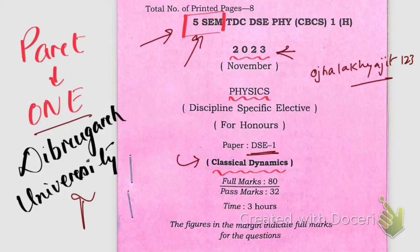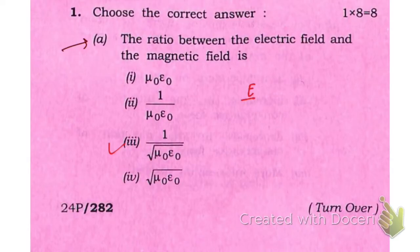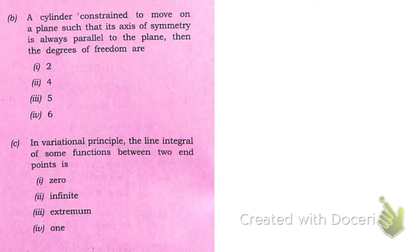The first question asks for the ratio between the electric field and the magnetic field. The correct answer is option three. The ratio between the electric field and the magnetic field is nothing but 1 over the square root of μ₀ε₀. That is the ratio.